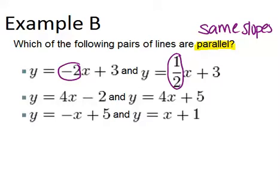We're looking for those numbers to be the same. So this first one is not the same. The second one, they're each four, so that's good. Those pairs of lines are parallel.